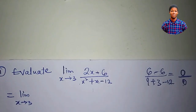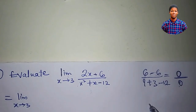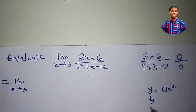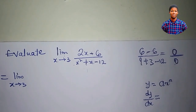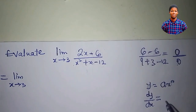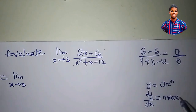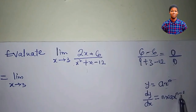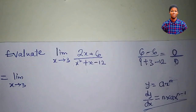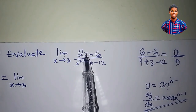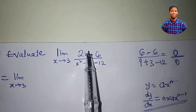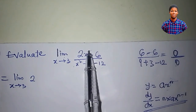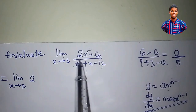Differentiate 2x minus 6. Using the power rule — if y equals ax to the power of n, then dy/dx equals n times a times x to the power of n minus 1 — differentiate 2x to get 2, since the power of x is 1, and 1 times 2 is 2. Then x to the power of 0 is 1, so 2 times 1 is 2. Minus 6 is a constant, so differentiating it gives 0. So we have 2 minus 0.